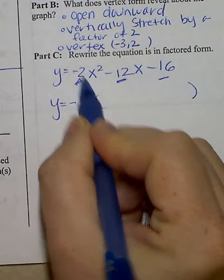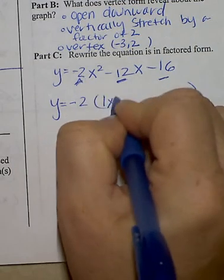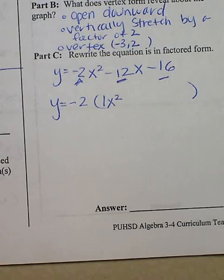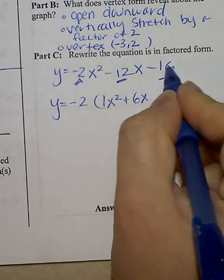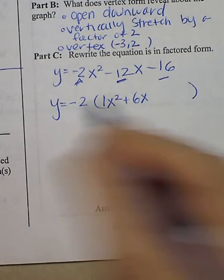Negative 2 divided by negative 2 is 1, bring down the x squared. Negative 12 divided by negative 2 is 6, bring down the x. Negative 16 divided by negative 2 is positive 8.